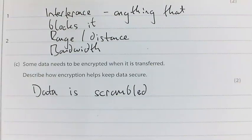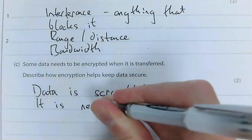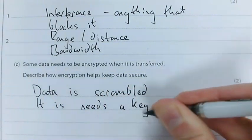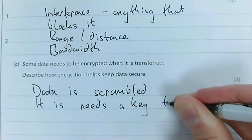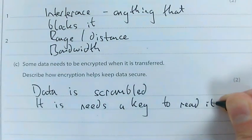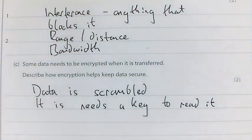So that if it was intercepted, it wouldn't be able to be read. Instead, it needs a key to read it. When it's scrambled, a key is created, and to be able to read that data wherever it's sent, you need that key to unlock it and be able to read the data. Examples of data that needs to be encrypted include emails, bank details, any kind of stuff that's really important that criminals would love to get their hands on.